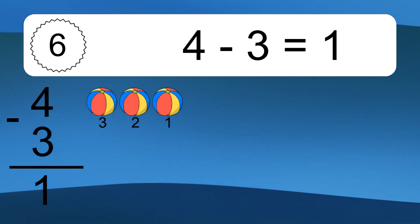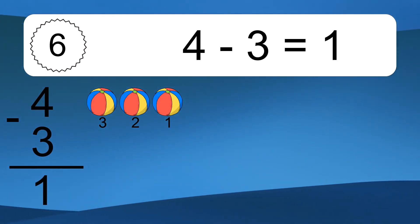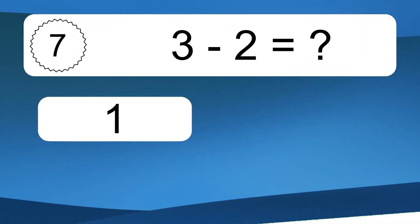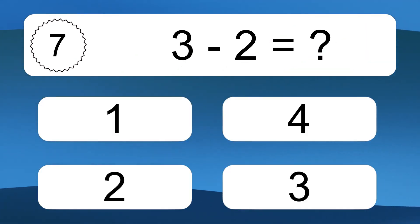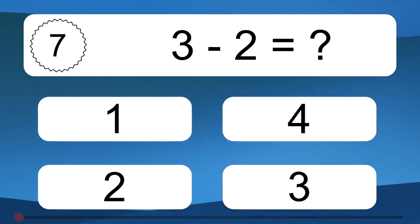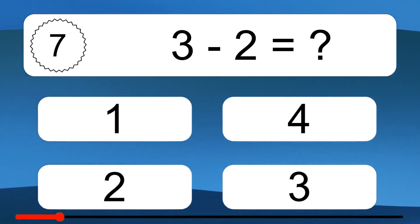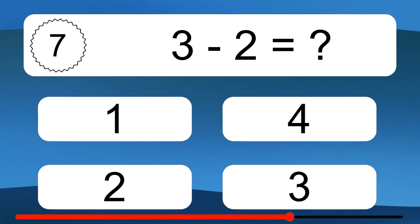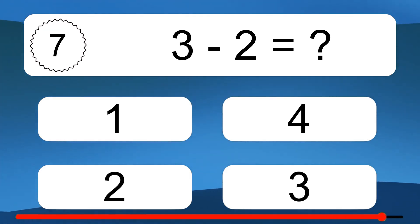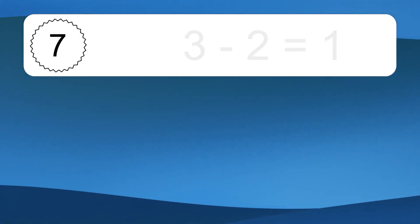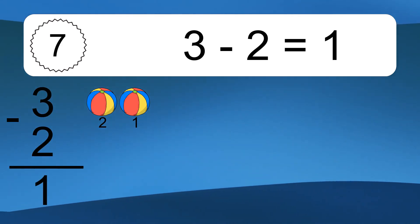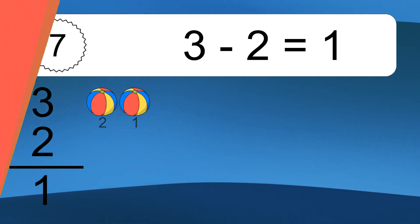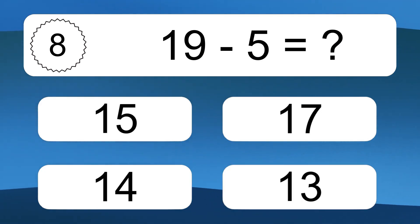4 minus 3 equals 1. Let's count it: 3, 2, 1. 3 minus 2 equals what? 3 minus 2 equals 1. Let's count it: 2, 1. 19 minus 5 equals what?